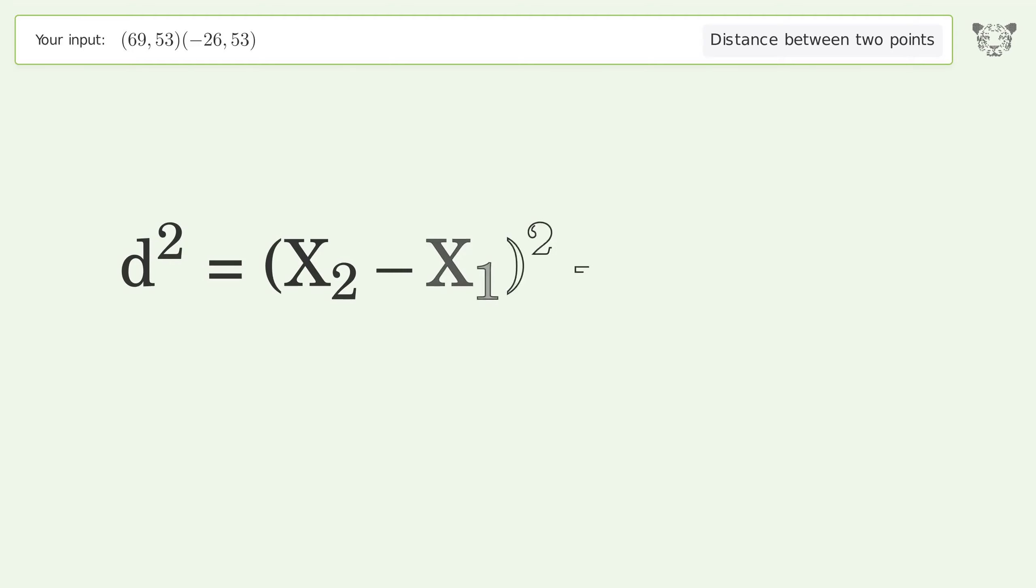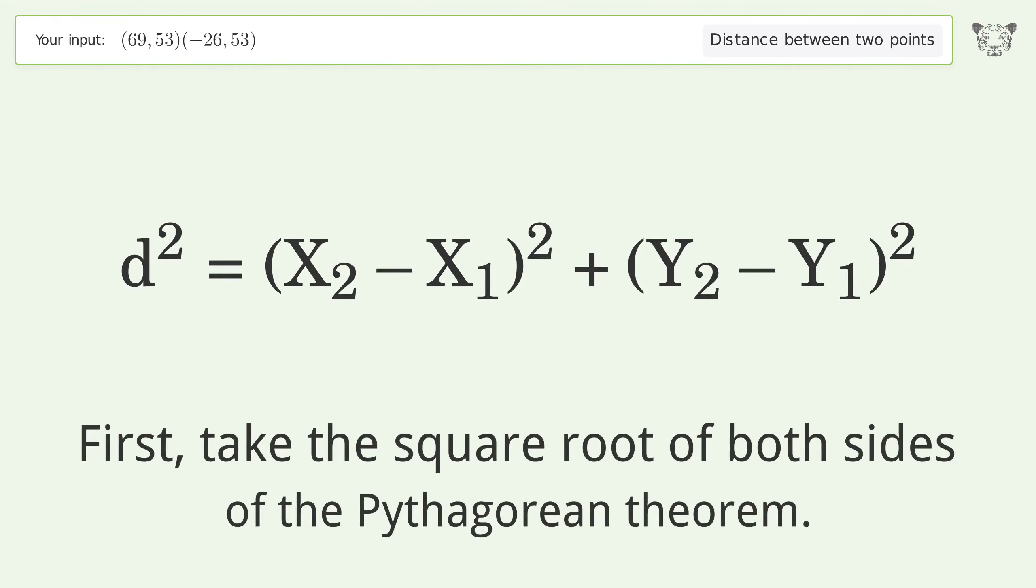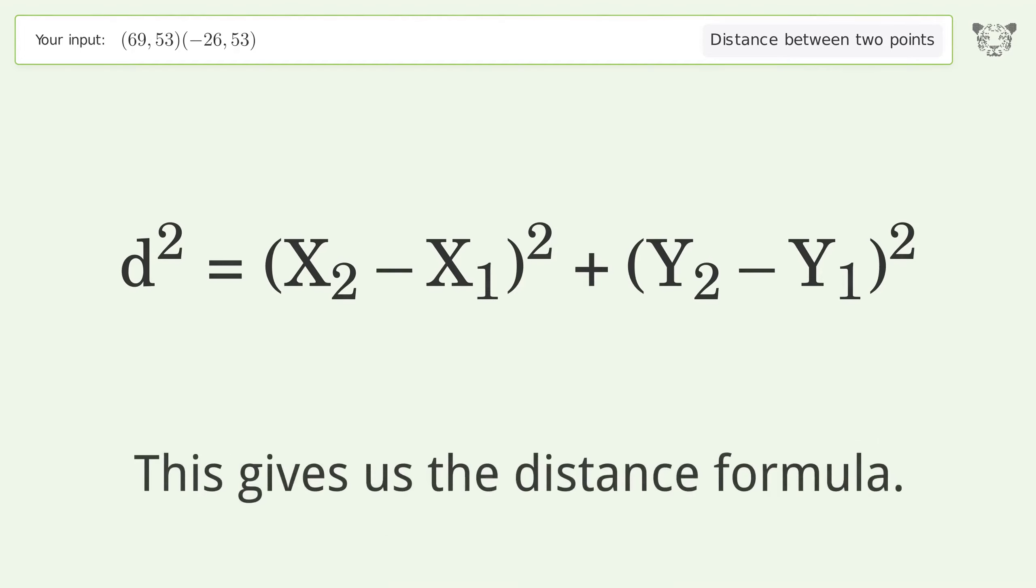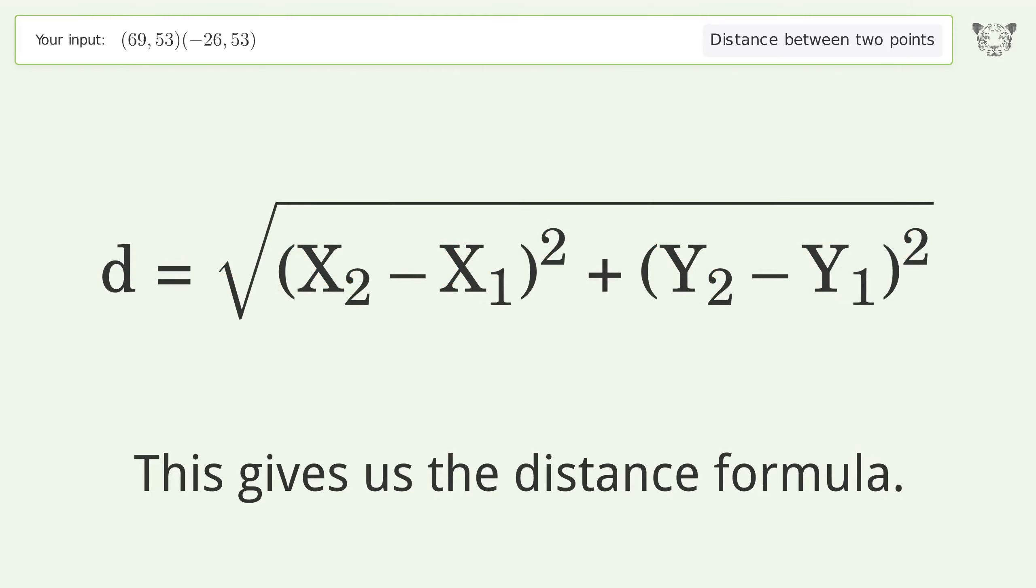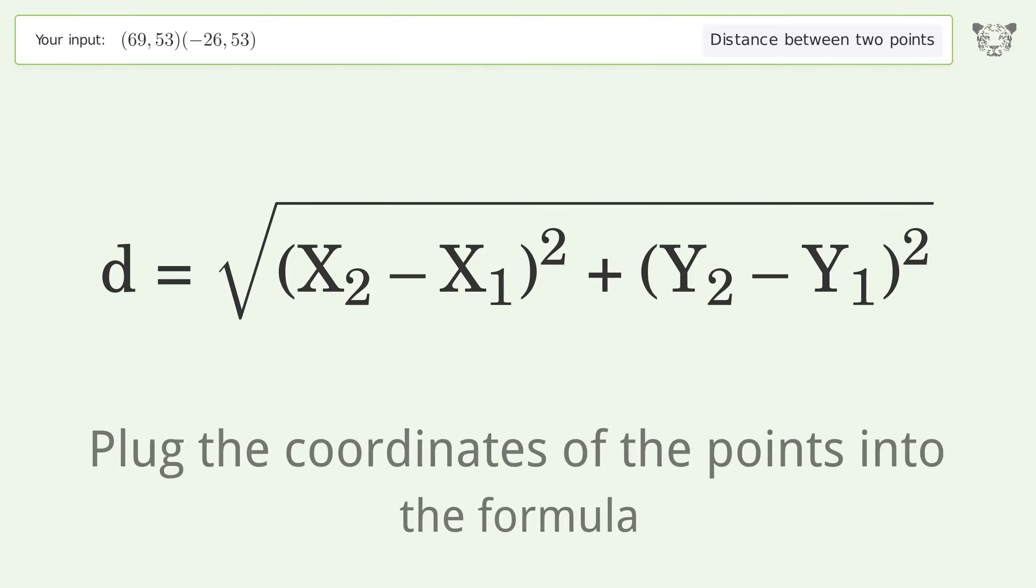d is the distance between the two points. First, take the square root of both sides of the Pythagorean theorem. This gives us the distance formula.